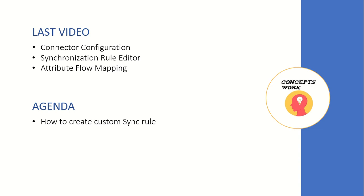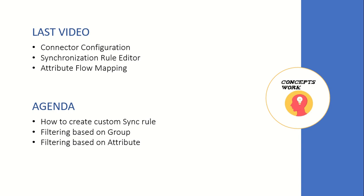The first use case will be that members of a specific group should not be sent to Azure Active Directory. The second is that user objects with a specific attribute value should not be sent to Azure Active Directory. And the last one is attribute flow mapping — how you can send different values to different attributes.